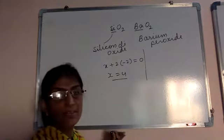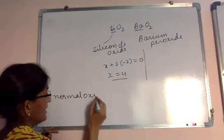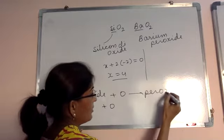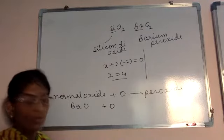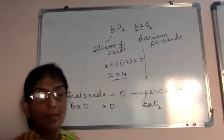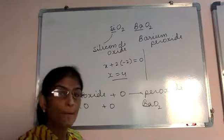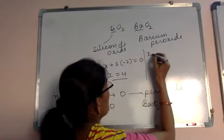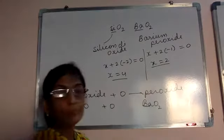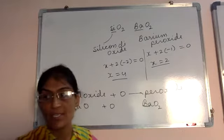In SiO2, oxygen has oxidation number minus 2. Let silicon's oxidation state be x; with 2 oxygens at minus 2, silicon has oxidation number plus 4. But in barium peroxide (BaO2), it is a peroxide — a normal oxide plus one extra oxygen — so the sum equals zero: x minus 2 equals 0, giving barium oxidation number plus 2.